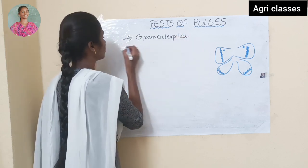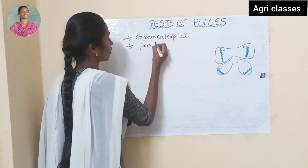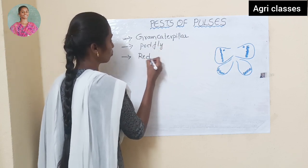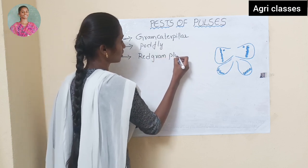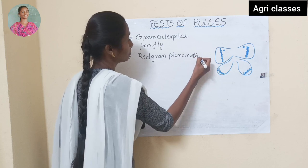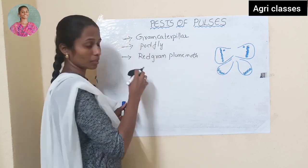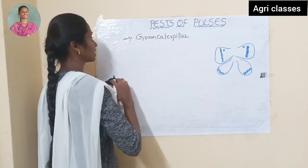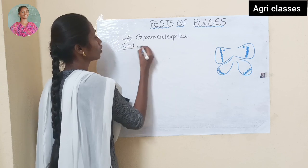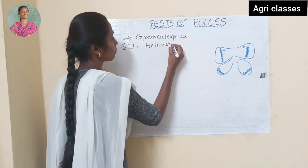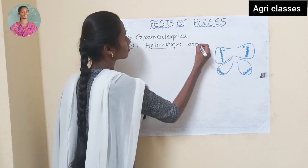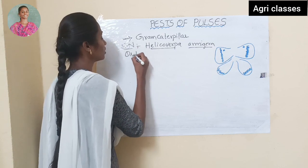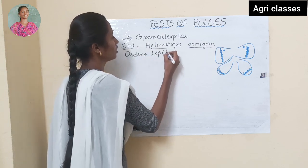First I will discuss about Gram Caterpillar. The scientific name of Gram Caterpillar is Helicoverpa armigera, and it belongs to the order Lepidoptera.